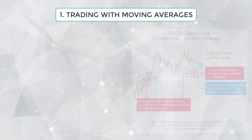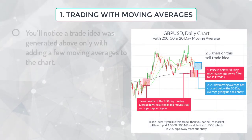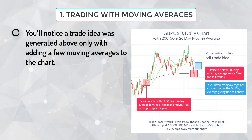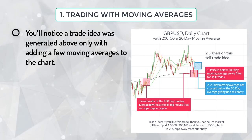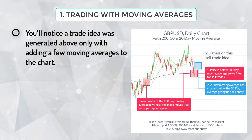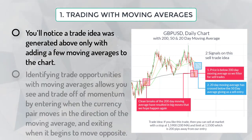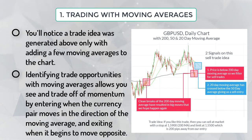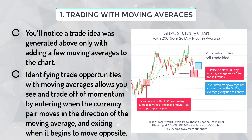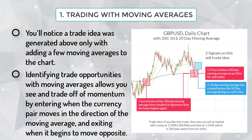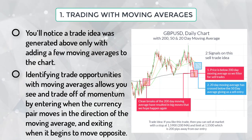On the GBP/USD daily chart, you will notice a trade idea was generated simply by adding a few moving averages to the chart. Identifying trade opportunities with moving averages allows you to see and trade off momentum by entering when the currency pair moves in the direction of the moving average and exiting when it begins to move opposite.